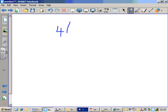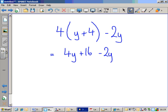We've got four, open brackets, Y plus four, close brackets, minus two Y. There we go. Multiply out the brackets. Four times Y is four Y. Four times plus four is plus sixteen. We've still got that little minus two Y. Remember, that's not part of the brackets, so we don't do any multiplying with it. It just stays there.